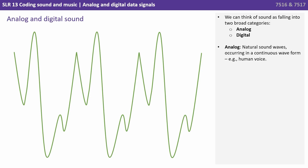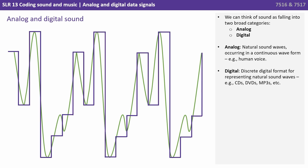We can think of sound as falling into two broad categories: analogue and digital. Analogue refers to natural sound waves occurring in a continuous waveform, for example the human voice. Digital is the discrete digital format for representing natural sound waves — this is sound stored on CDs, DVDs, and MP3s.